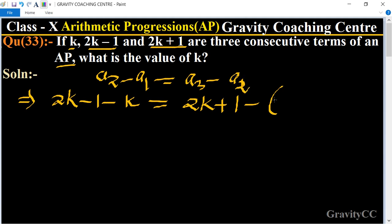This implies k minus 1 equals 2k plus 1 minus 2k minus 1. The 2k terms cancel.